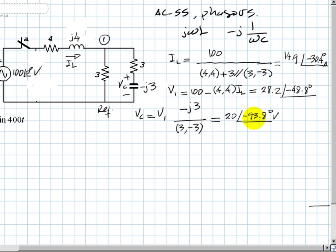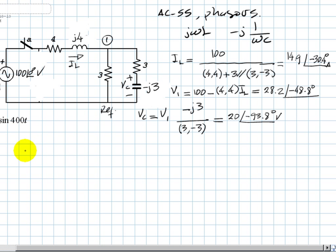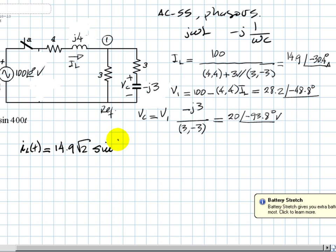Now we can write those voltages and currents as functions of time. The current in the inductor, for some reason this doesn't want to work. So we finally can write the current in the inductor, IL, as a function of time. It is 14.9 root 2 to have the peak value, and that is sine of 400T minus 30.4 degrees.